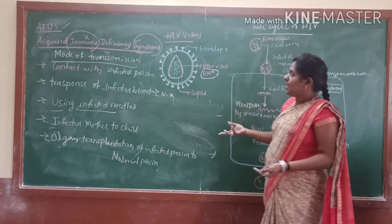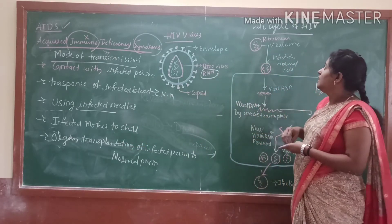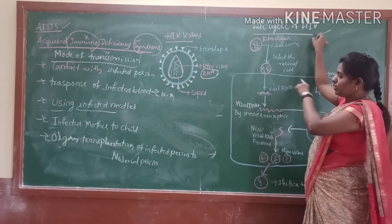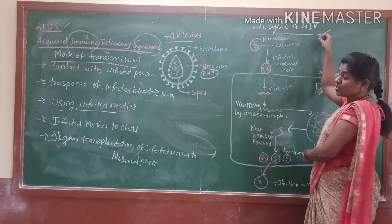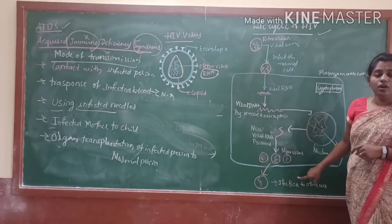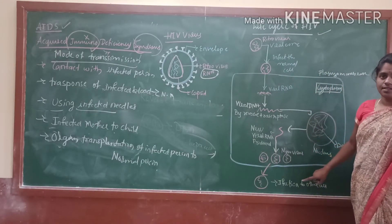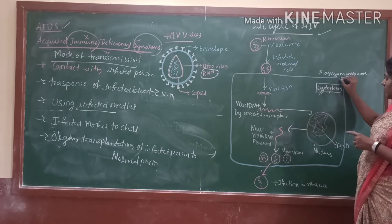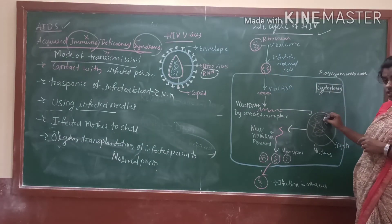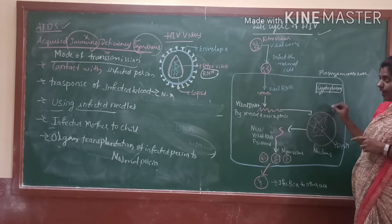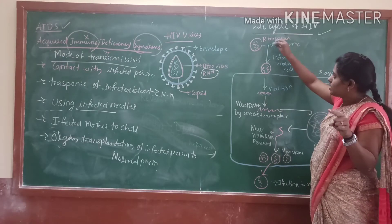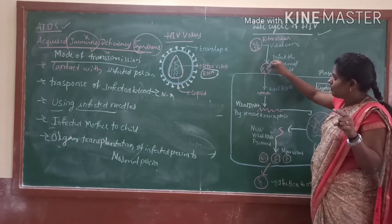And after that, the life cycle of HIV — how it will be infected and what changes occur in our cell and how it will be infected to other cells. Firstly, this is a normal cell which consists of cytoplasm and nucleus. When our retrovirus infects, here the T helper cells are present. It affects firstly the T helper cells.